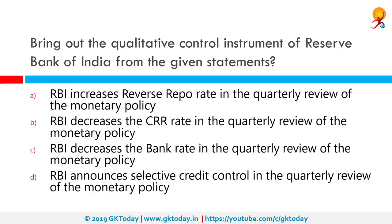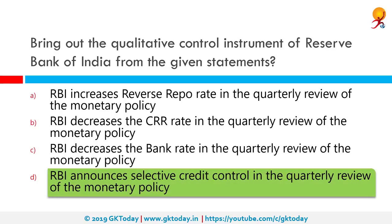Bring out the qualitative control instrument of the Reserve Bank of India. The correct answer is that RBI announces selective credit control in the quarterly review of monetary policy. The traditional methods include bank rate policy, open market operations, and variable reserve ratio. Qualitative, also called selective credit control, instruments work through regulation of margin requirements, credit rationing, regulation of consumer credit, and direct action.